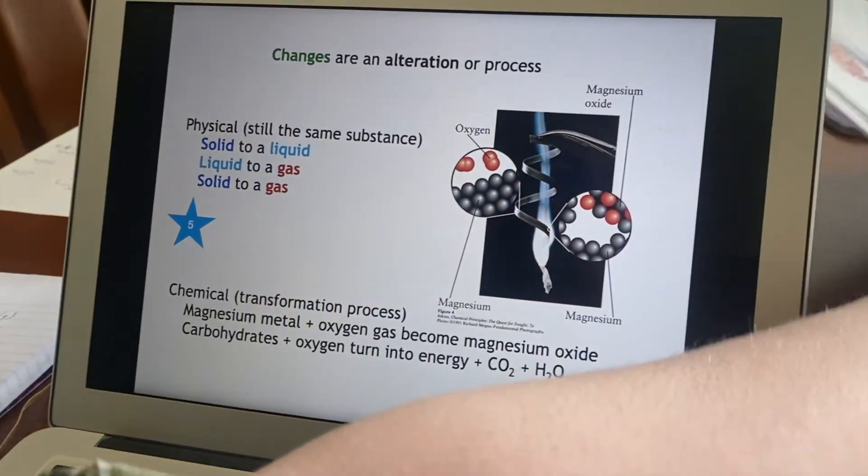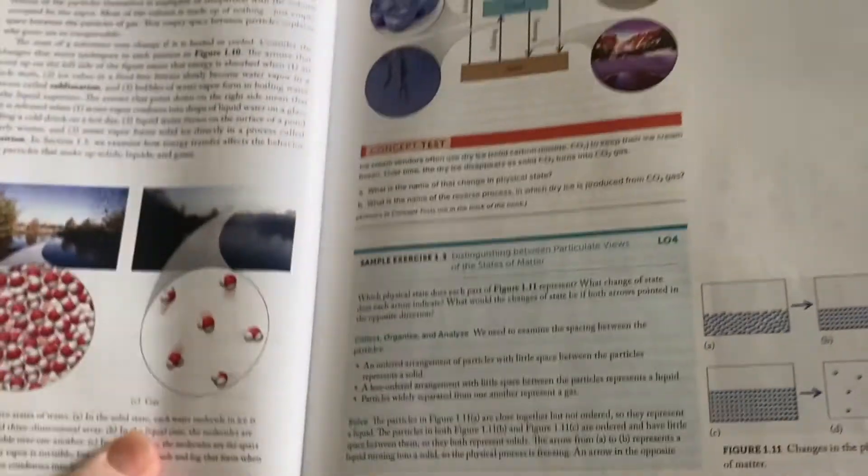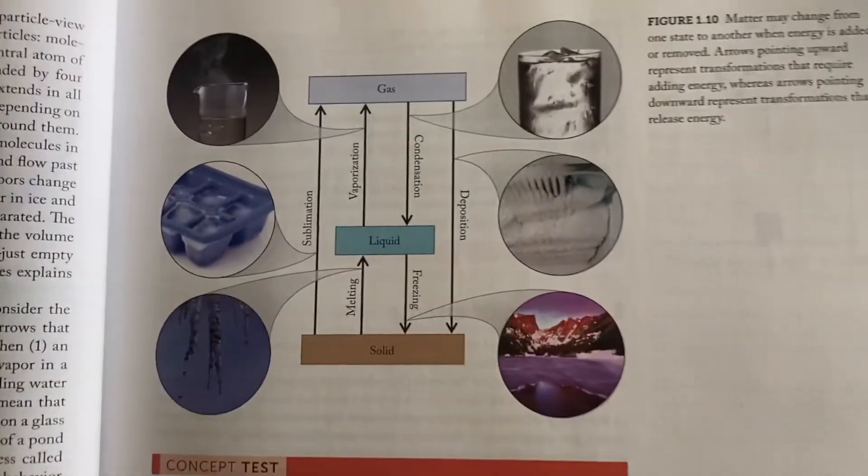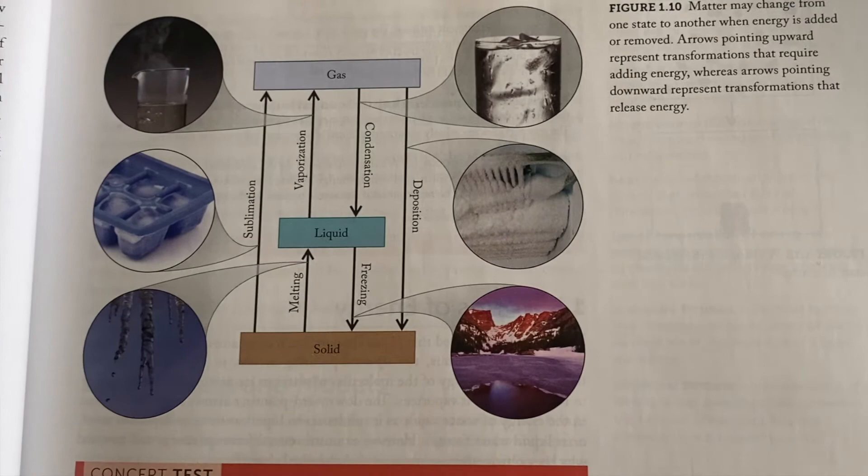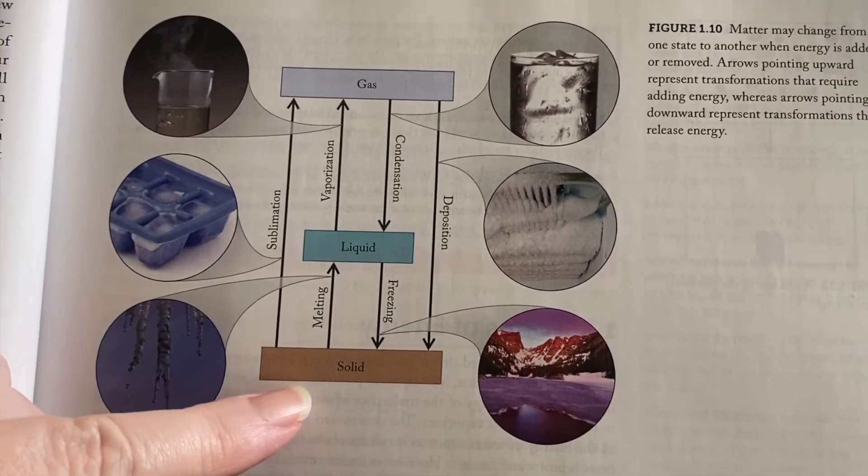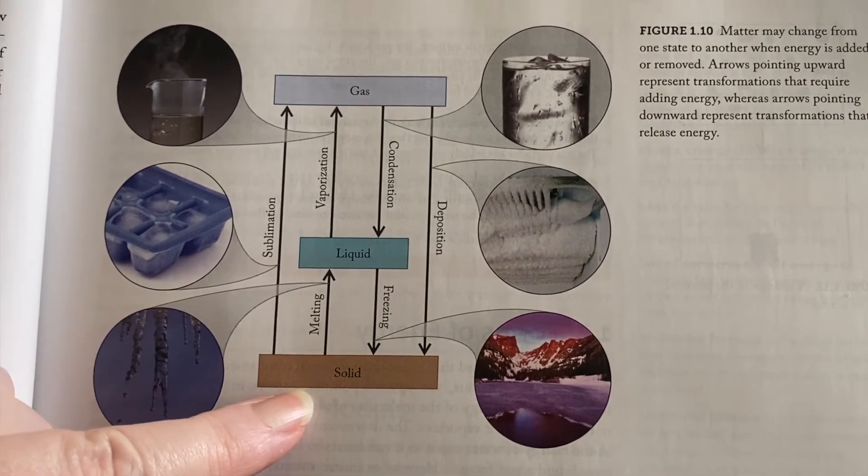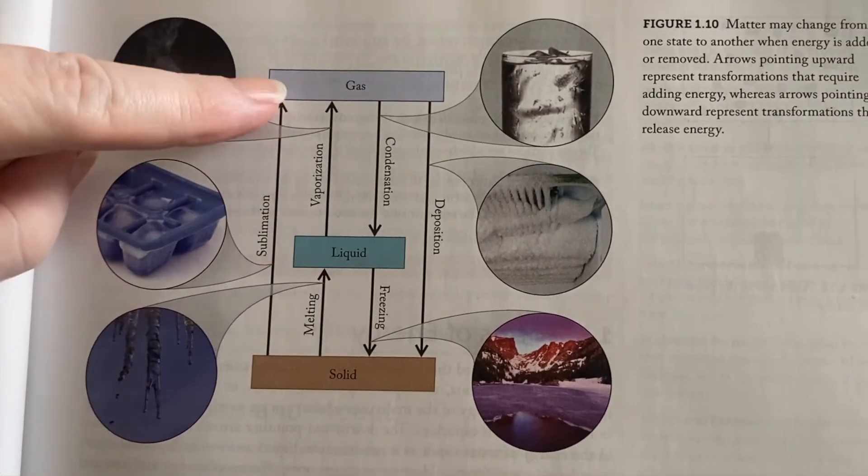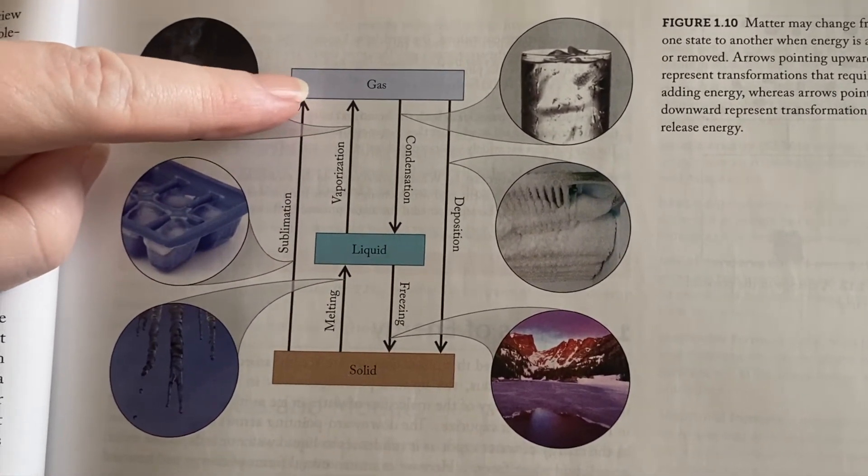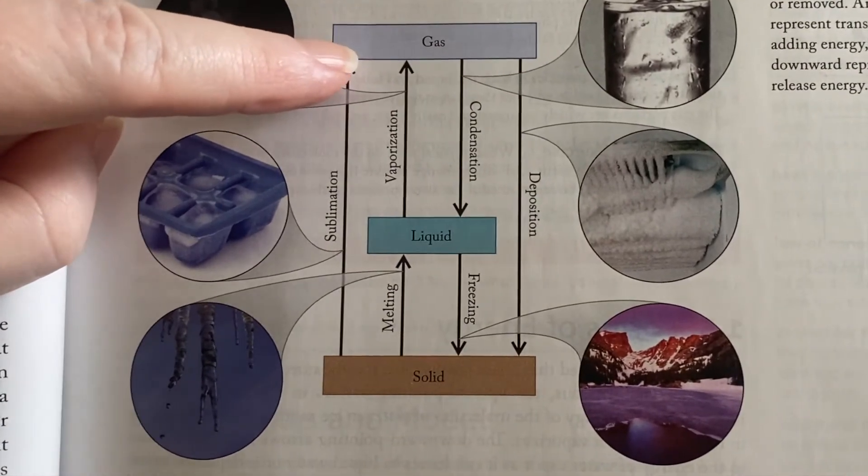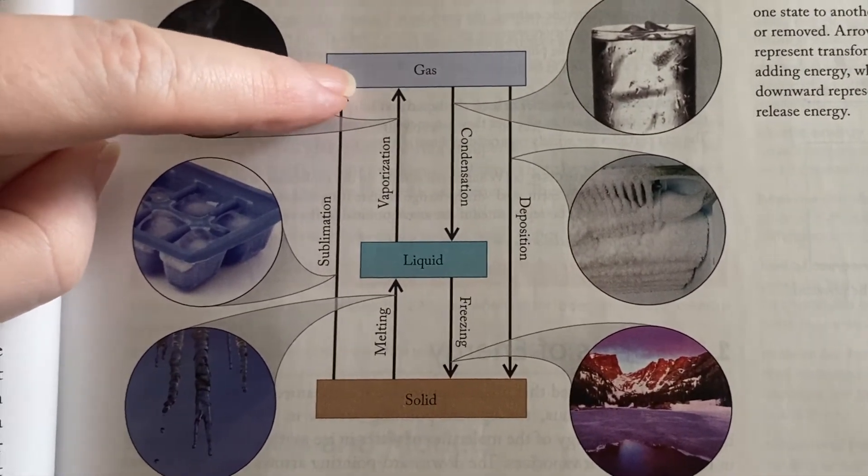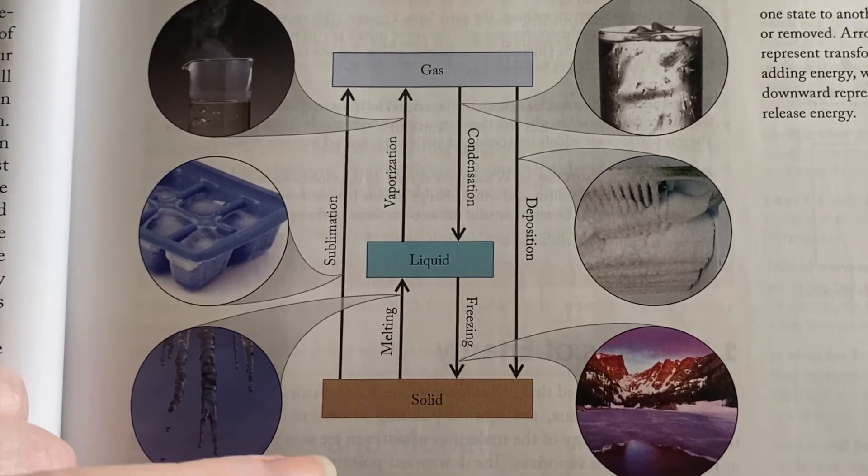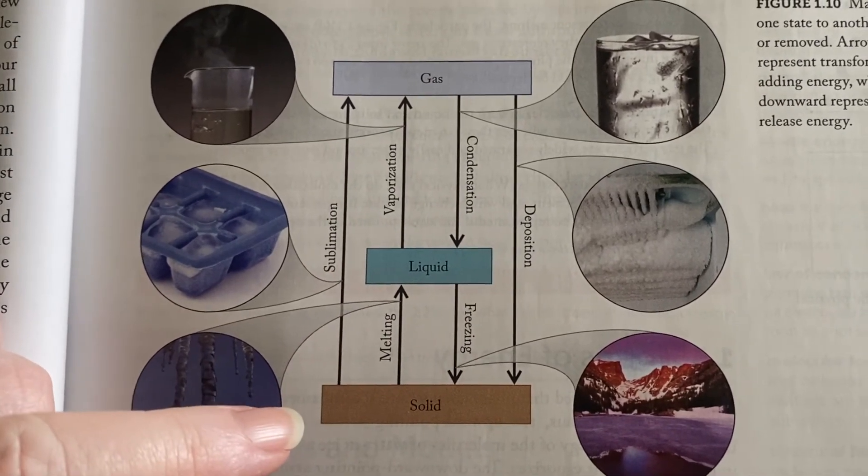Here's a lovely example from your book where they have put the lowest energy, slowest moving at the bottom—solids—in the middle liquids, and then when it's really freely able to move and not even interacting with its own particles, a gas. And then we have labeled what all the different changes are called.